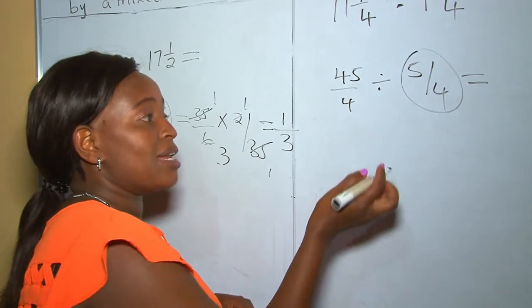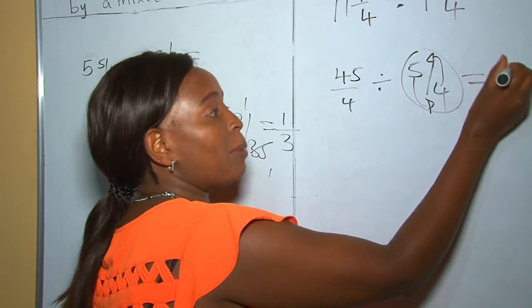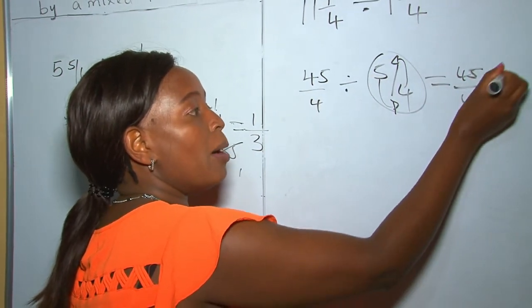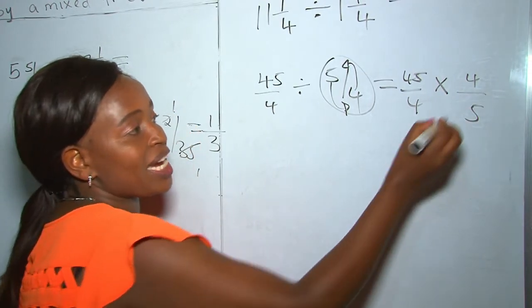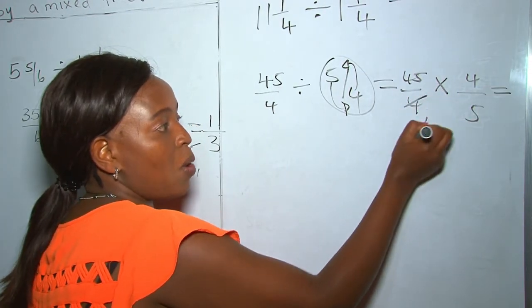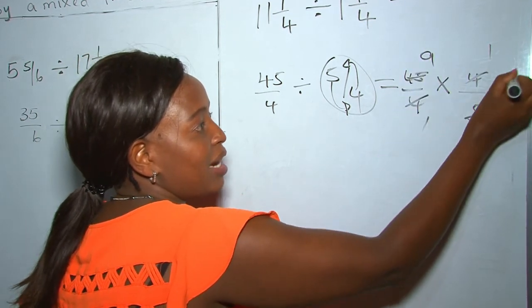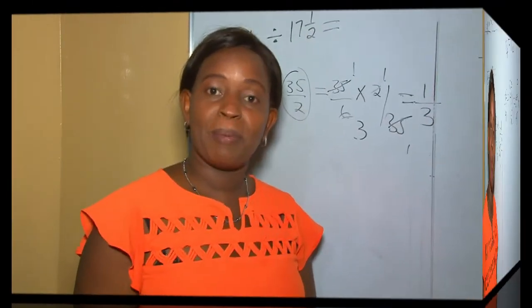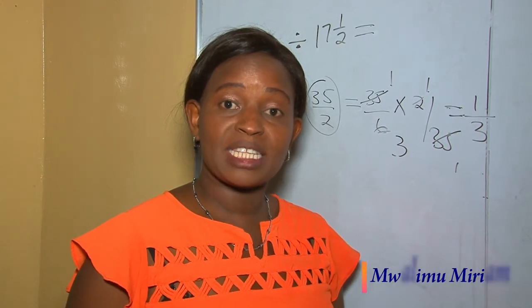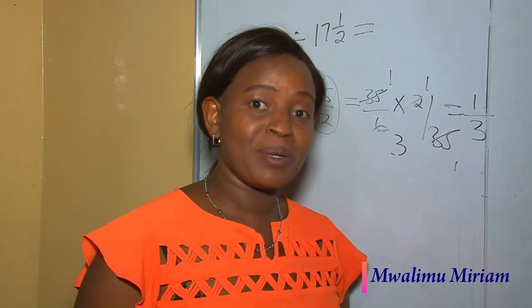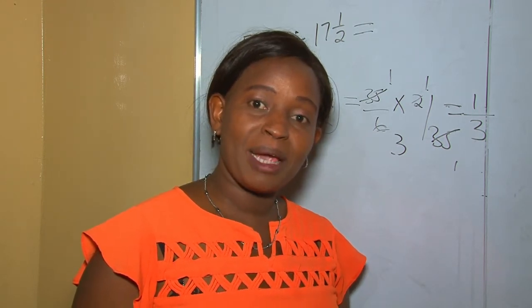Now we change our second fraction into its reciprocal: the denominator goes up and the numerator comes down, giving 4 over 5. So it becomes 45 over 4 multiplied by the reciprocal 4 over 5. We cross-cancel 4 by 4, giving 1 by 1, and 45 by 5 gives 9. The answer is 9. I wish you the best — kindly subscribe, share with friends, and leave a comment. Remember, practice makes perfect. Thank you for watching, bye bye.